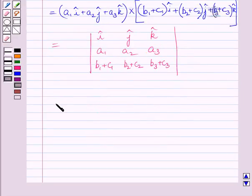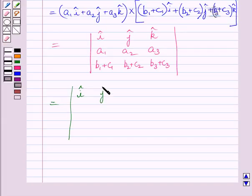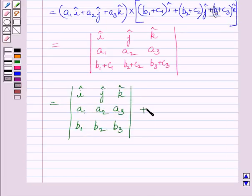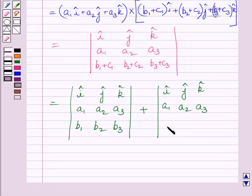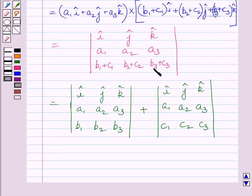Now this determinant can be further written as the sum of two determinants. The first determinant has unit vectors i, j, k; then a1, a2, a3; then b1, b2, b3. The second determinant has unit vectors i, j, k; then a1, a2, a3; then c1, c2, c3. Here we have used the property of determinants that if each element of a row is expressed as a sum of two or more terms, then the determinant can be expressed as a sum of two or more determinants.